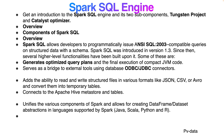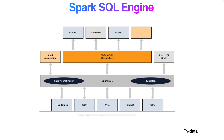It connects to the Apache Hive Metastore and unifies the various components, allowing the creation of DataFrames and Datasets abstractions supported by Spark. If you look at the component diagram, on top of Spark SQL you can read from Hive tables, JSON, Avro, Parquet, and ORC. Above that, we have the Catalyst Optimizer and Tungsten. Tools like Tableau can access it using JDBC, Snowflake via JDBC, and Spark applications can use Spark SQL directly.